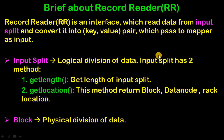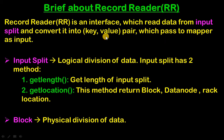First we are going to see a brief about Record Reader. Record Reader is an interface which reads data from an input split and converts it into key-value pairs, which are passed to the mapper as input.